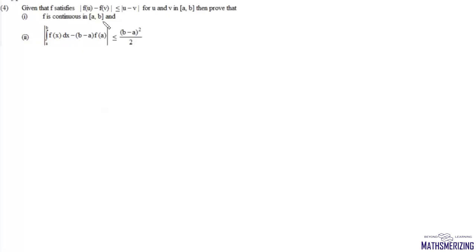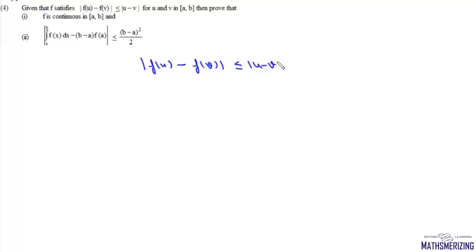The question is: if a function f satisfies |f(u) - f(v)| < |u - v| for any u and v lying in the interval [a, b], then we need to prove that f is continuous in [a, b].